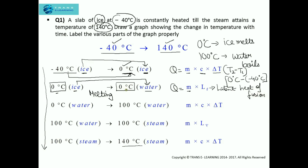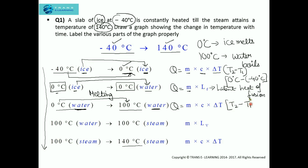Now we have water at 0 degree Celsius. On heating further, water at 0 degree Celsius will gain heat and its temperature will rise to 100 degree Celsius. The temperature has changed from 0 degree Celsius to 100 degree Celsius, but the state has not changed. So the heat absorbed is MC delta T, where delta T is T2 minus T1, which is 100 degree Celsius minus 0 degree Celsius.